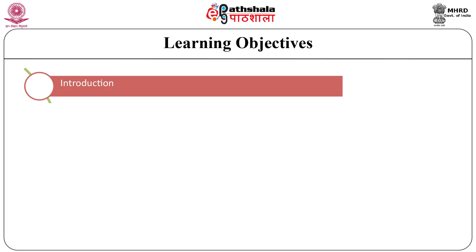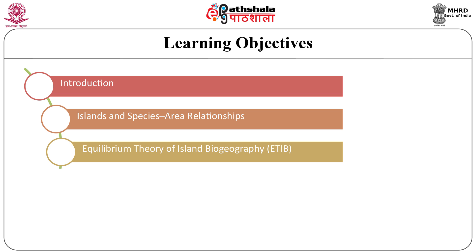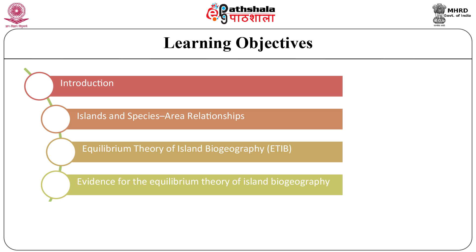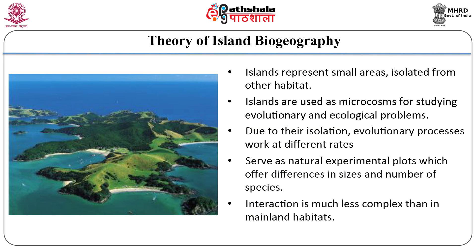The learning objectives of this module are: introduction to the theory of biogeography, islands and species-area relationships, equilibrium theory of island biogeography, evidence for the equilibrium theory of island biogeography, and island biogeography theory and conservation. A great deal of conservation research has been done on islands because they are small, replicated units of area isolated from other habitat. They are very useful for species, community, and ecosystem studies, and are used for studying evolutionary and ecological problems.